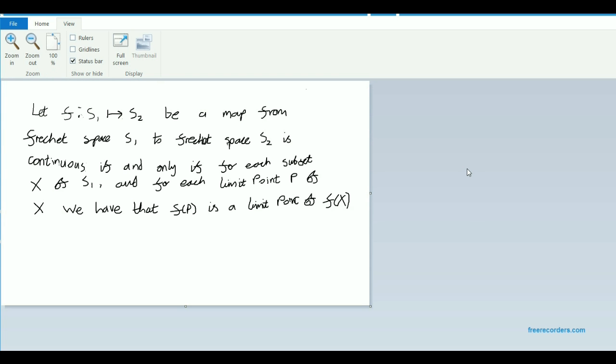of the image F of X of the subset of X that we started with. So let's try and say this again. Basically what we're saying here is that a necessary and sufficient condition for a mapping from one Fréchet space S1 to another Fréchet space S2 to be a continuous mapping is that if we take any subset of our first space S1,